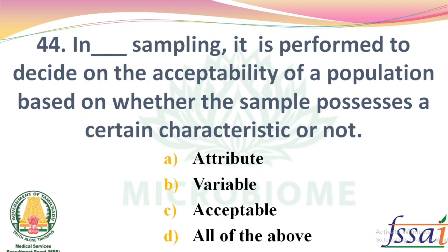In dash sampling, it is performed to decide on acceptability of a population based on whether the sample possesses a certain characteristic or not. Options: Attribute, Variable, Acceptable, All of the above. The right answer: Option A, Attribute.